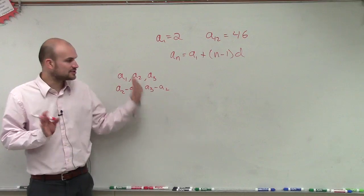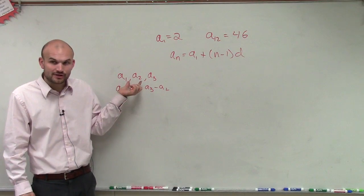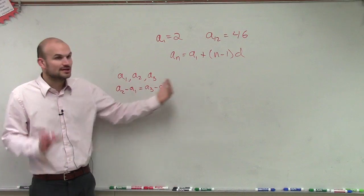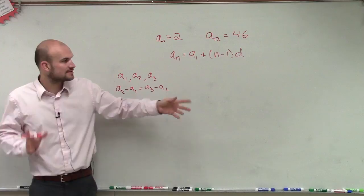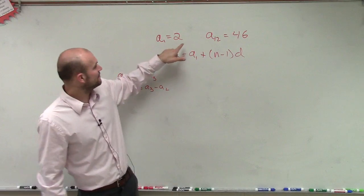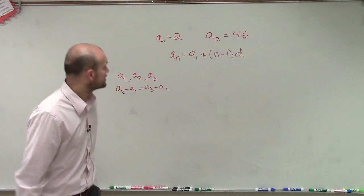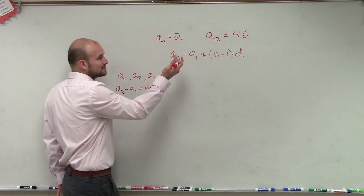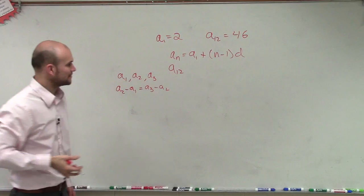Yes, they're still going to have a constant difference. But if I don't have two consecutive terms, I can still subtract them and find what the difference is. So what I'm saying is... they do give us a₁. So we have a₁ and a₁₂. Therefore, that thing I was just talking about is not really going to apply here.